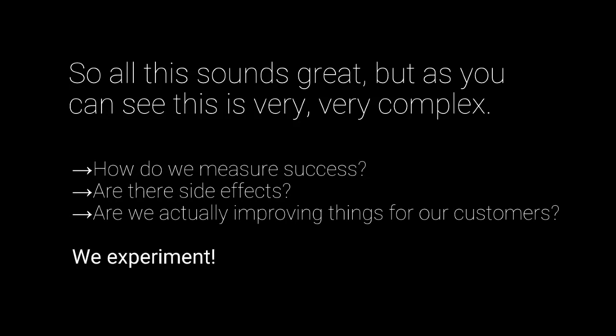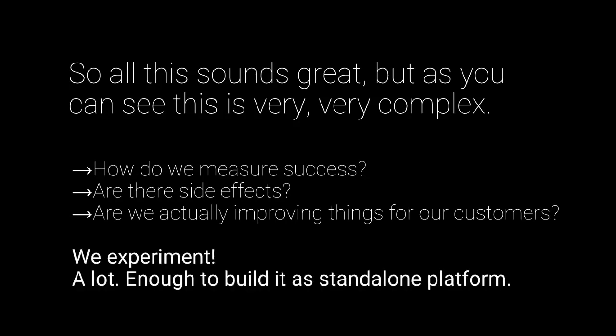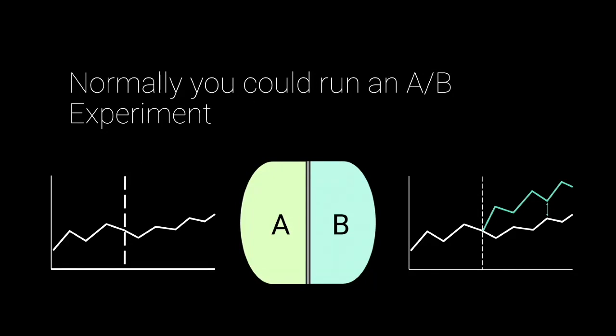The way we do this is we experiment a lot — enough to build a standalone platform for the entire company to use. When you hear about experimentation, one of the most common things is A/B experimentation. You take your market, take riders, take drivers, segment them into A and B groups, and launch that change. One side is your control group (A), and on the other side (B) you measure some sort of lift in a metric. This is basic A/B experimentation using t-testing.